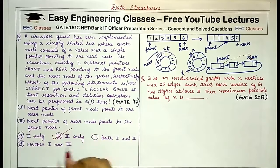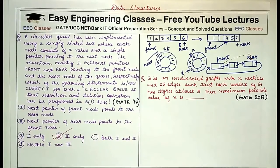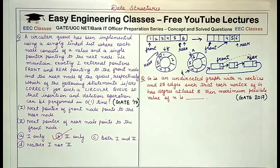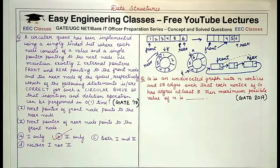So only the second statement is correct, and option B is the answer. Now for the second question: G is an undirected graph with n vertices and 25 edges such that each vertex of G has degree at least three. What is the maximum possible value of n?